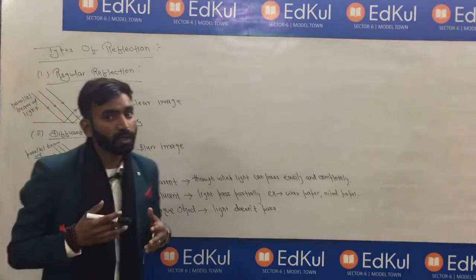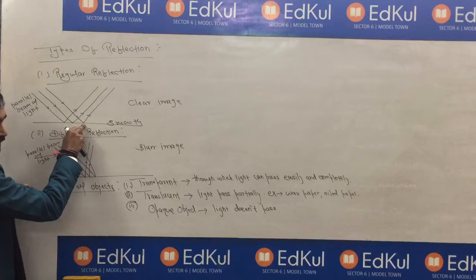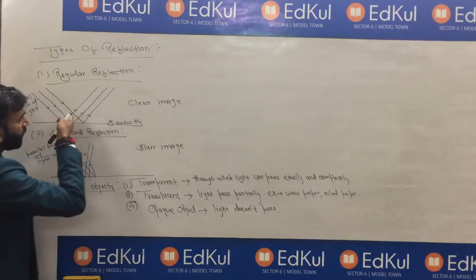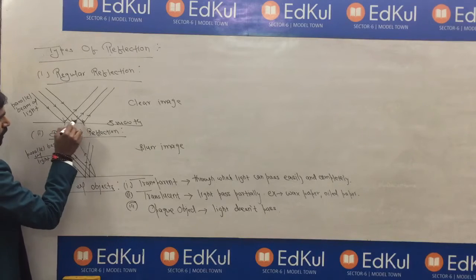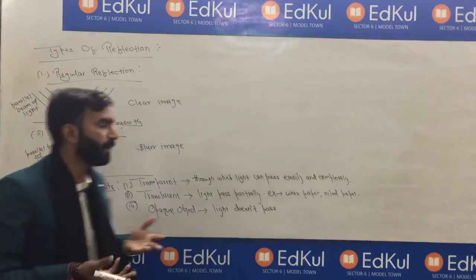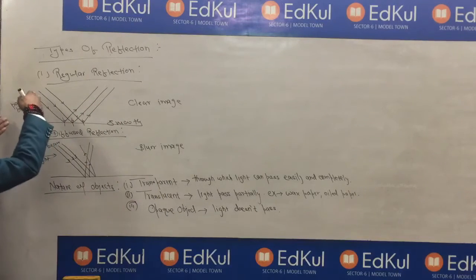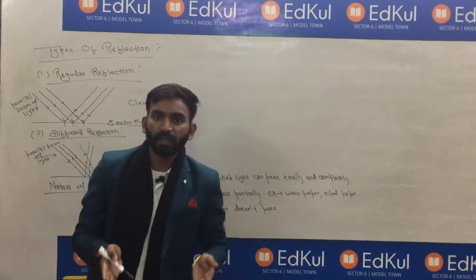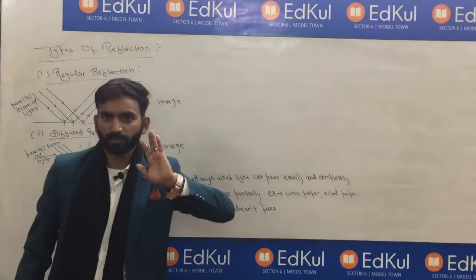What is regular reflection? When a parallel beam of light strikes a smooth, polished surface, the reflected rays also form a parallel beam. This is called regular reflection. The reflected image is clear and sharp.